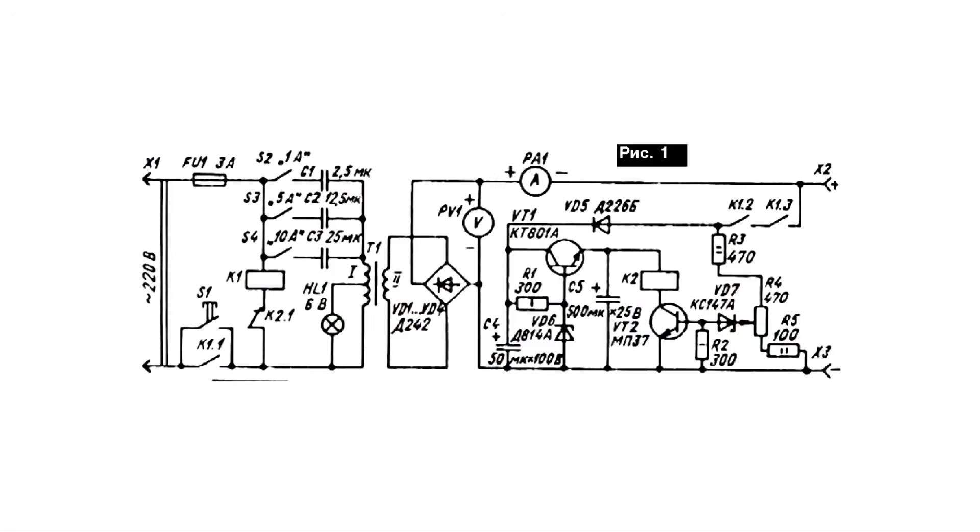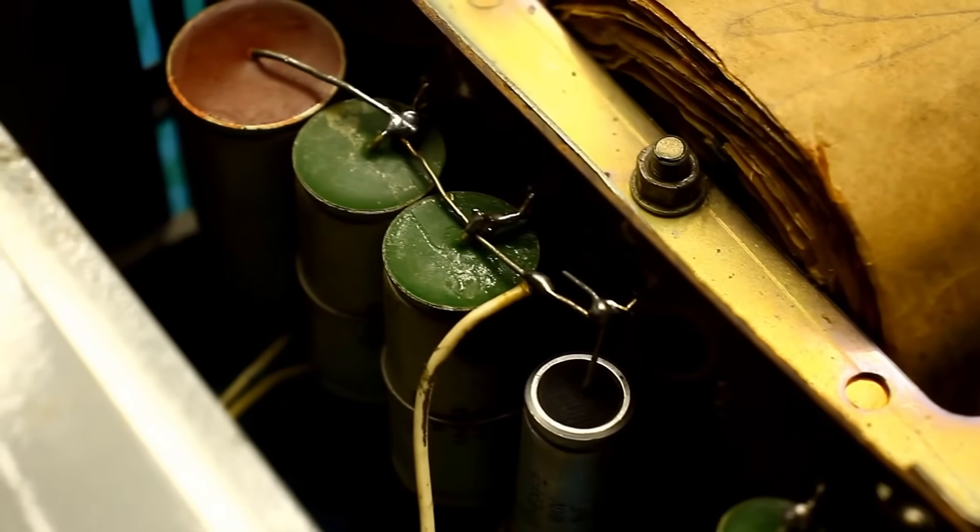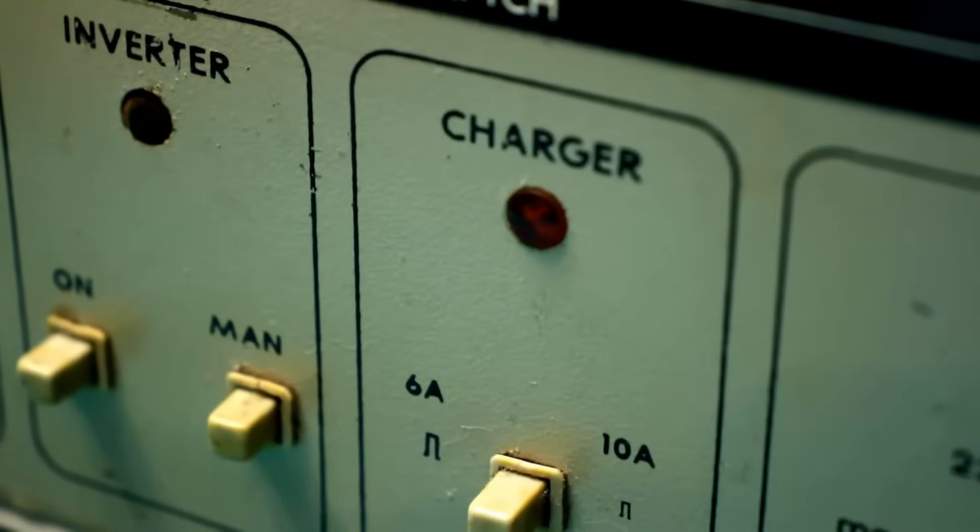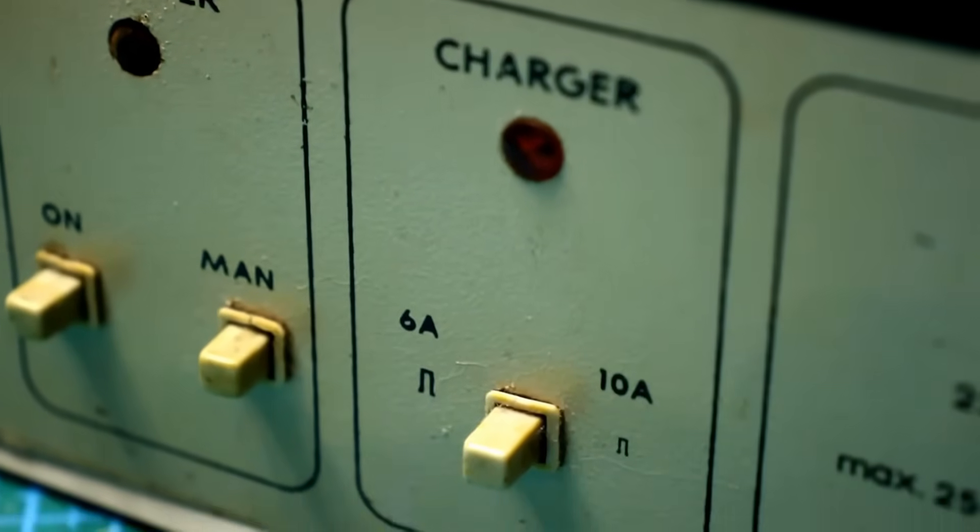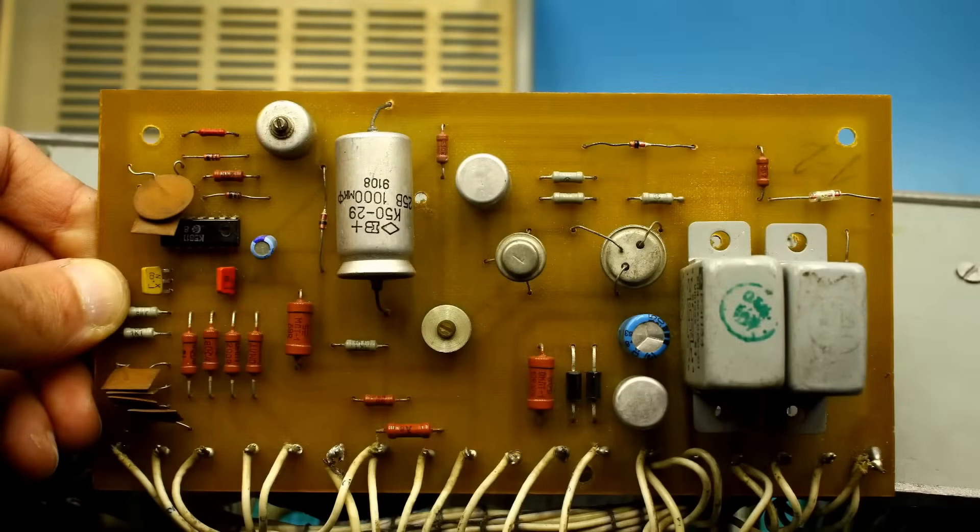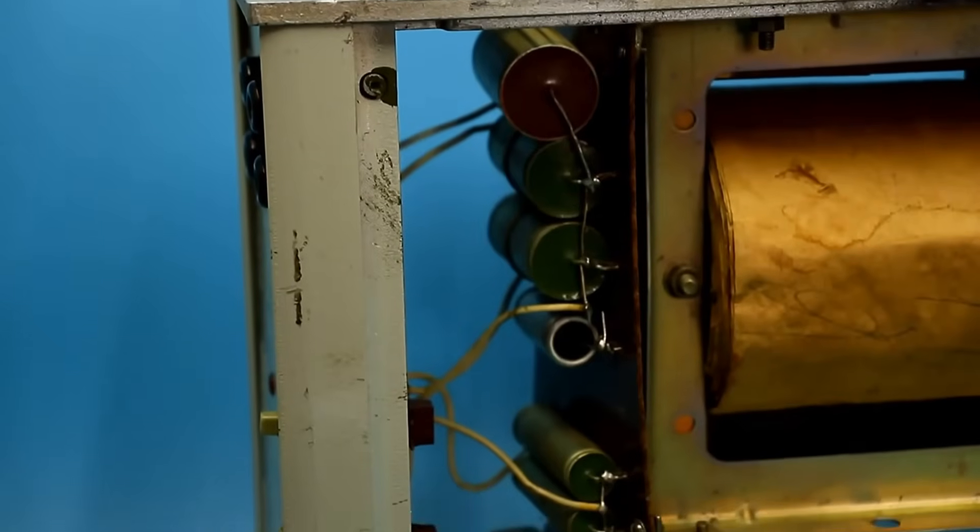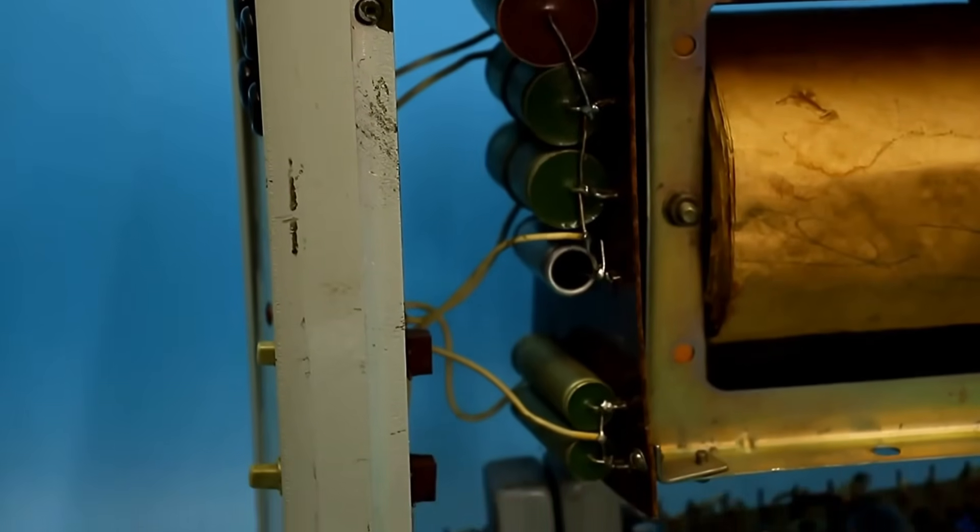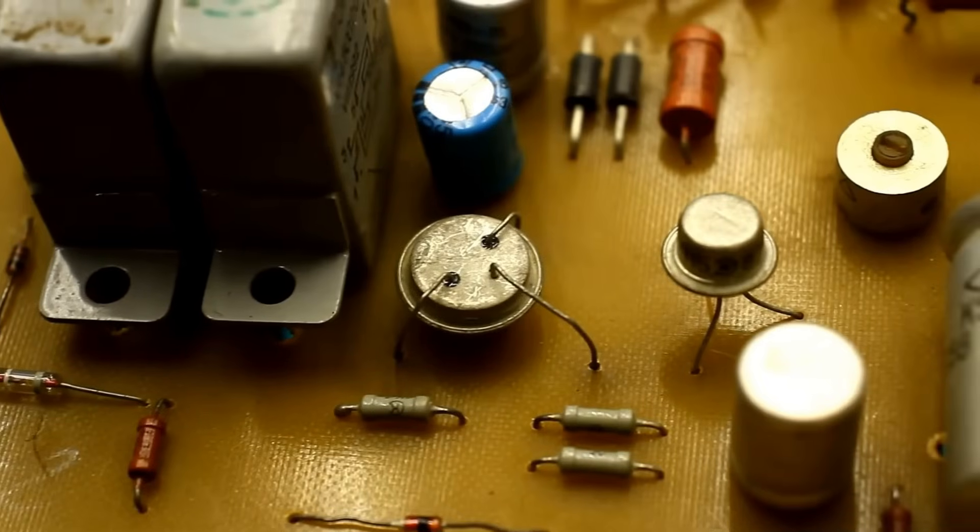How is the charge current limitation organized here? In a very simple and reliable way. Ballast capacitors are connected in series with the transformer's primary winding. The greater the capacitance of the capacitor, the higher the current limitation. The charge current selection button simply connects additional capacitors in parallel, thereby increasing the capacitance and charge current. Current stabilization and other headaches here are not needed. The battery charges with a current of no more than 6 or 10 amps, and when it is charged, the device turns off. Such a system is very reliable and simple.